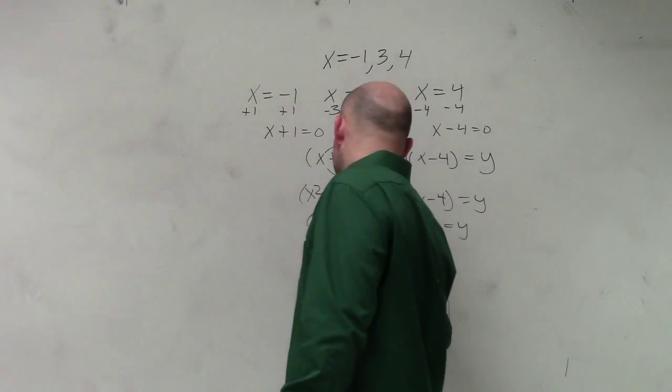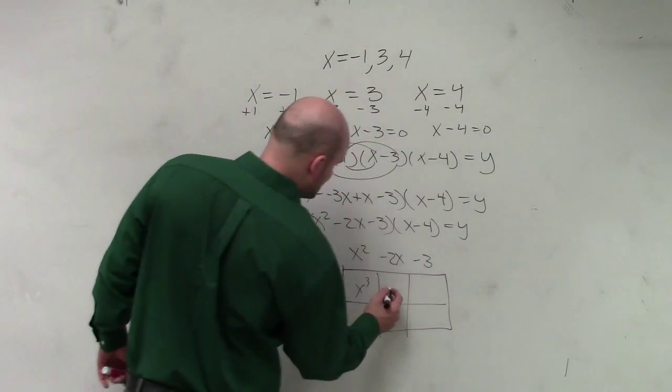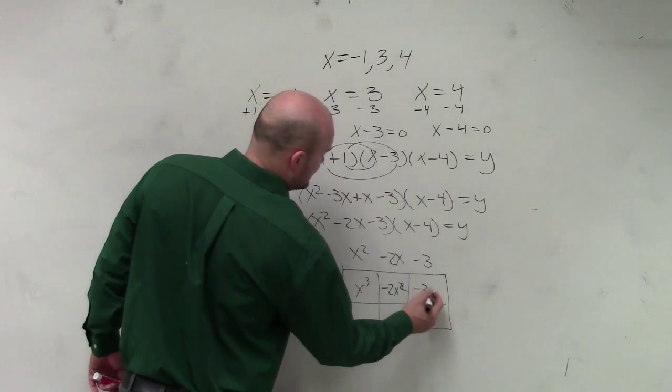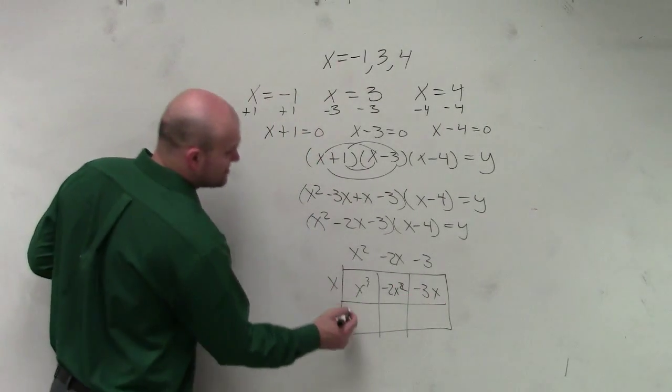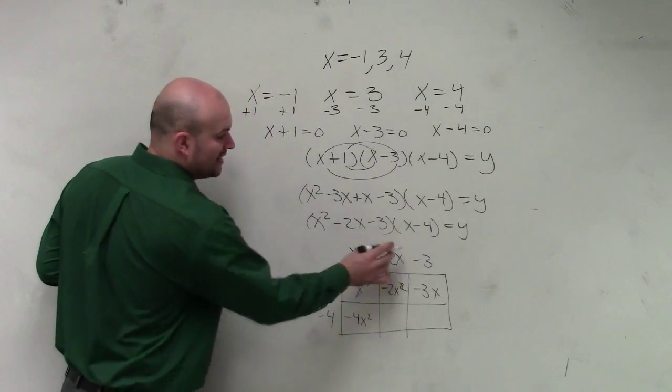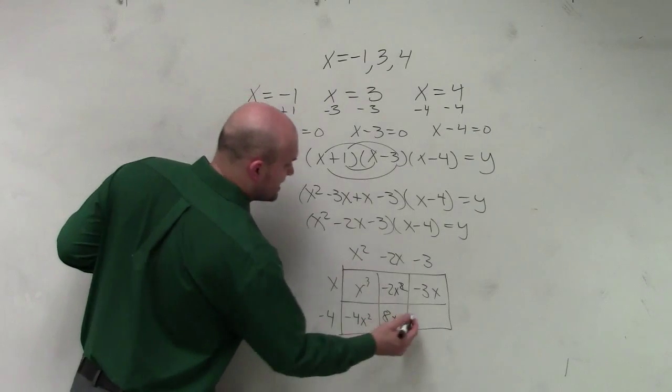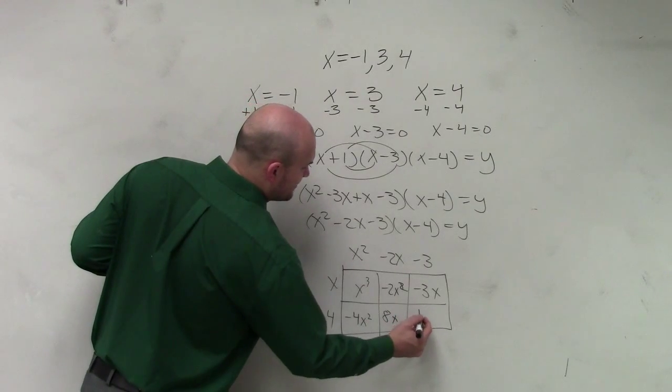x times x squared is x cubed. x times negative 2x is negative 2x squared. x times negative 3 is negative 3x. x squared times negative 4 is negative 4x squared. Negative 4 times negative 2x is positive 8x. Negative 4 times negative 3 is positive 12.